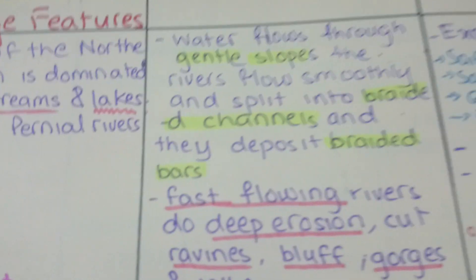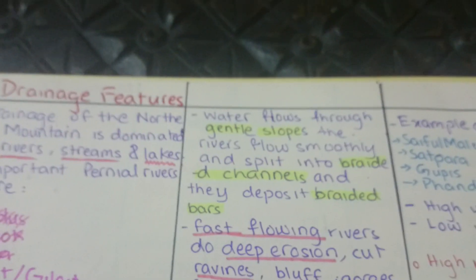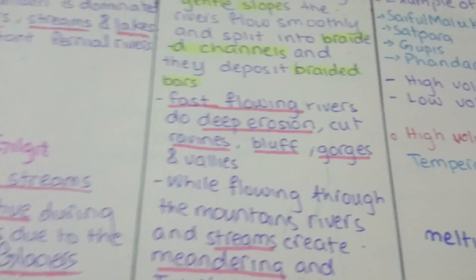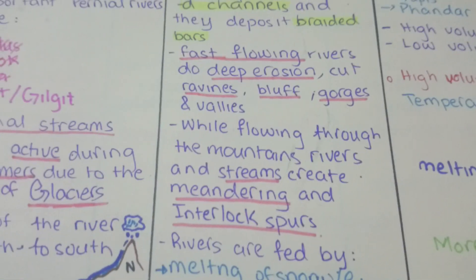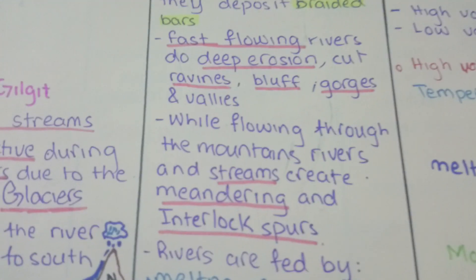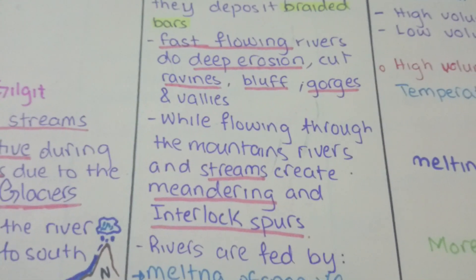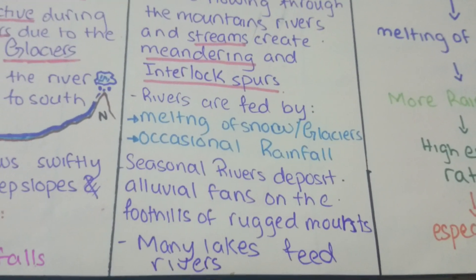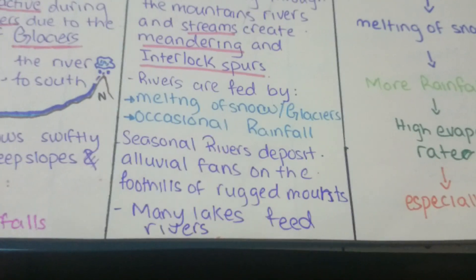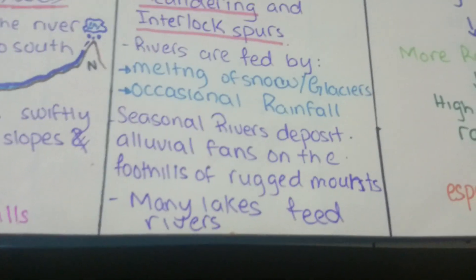Water flows through gentle slopes where rivers flow smoothly, splitting into braided channels and depositing braided bars. Fast-flowing rivers cause deep erosion, cutting ravines, bluffs, gorges, and valleys. While flowing through mountains, rivers and streams create meandering and interlocked spurs. Rivers are fed by melting snow, glaciers, and occasional rainfall. Seasonal rivers deposit alluvial fans on the foothills of rugged mountains.